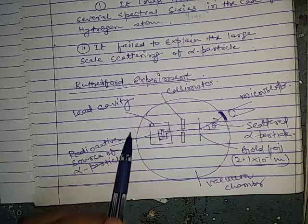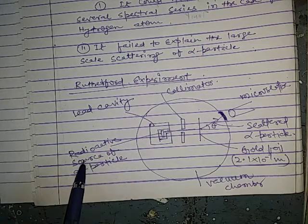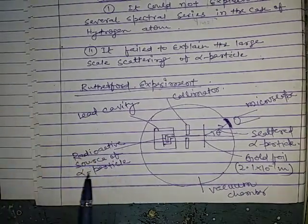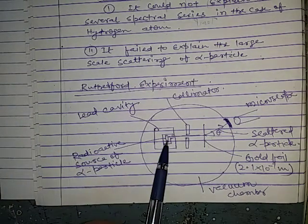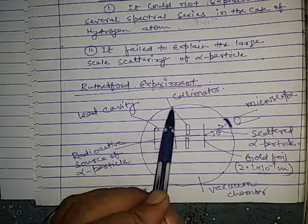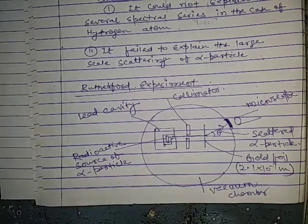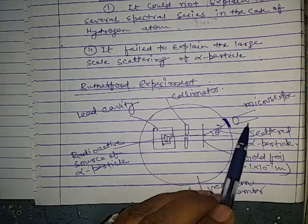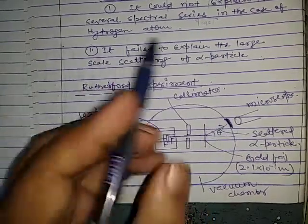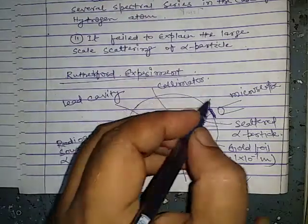In the Rutherford experiment, there is a lead cavity which stops the radiation. Inside the lead cavity, a radioactive source of alpha particles is placed. A collimator forces the alpha particles to move in a straight line. There is a movable detector — simply a microscope — and a zinc sulfide screen.